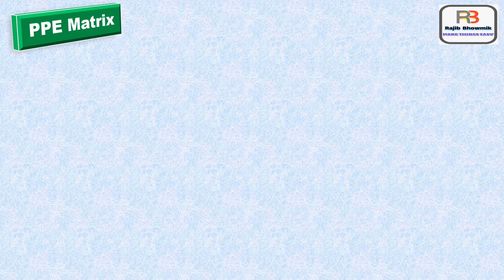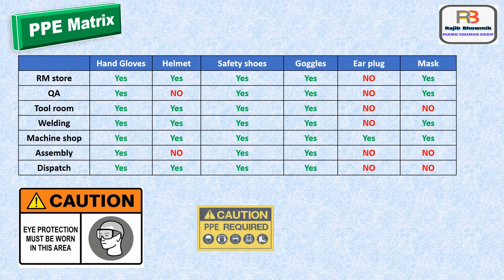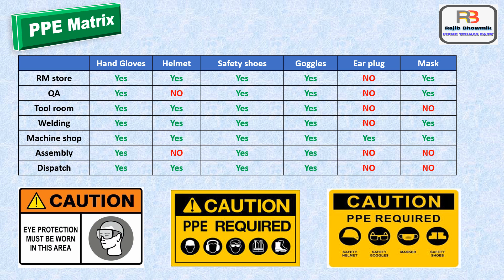Now let us understand what is PPE matrix. Industry-wise, there should be a display board showing what PPEs are to be used in each area. In the table, the first column lists all working areas, and the first row lists various types of PPEs. Area-wise, applicable PPEs are marked as yes or no. In addition to the PPE matrix display board, small individual area boards can also be displayed.